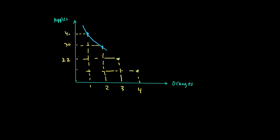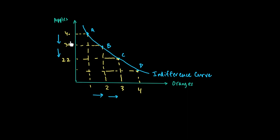As you get more and more oranges, you get less and less apples. As the consumer moves from A to B to C, he is choosing fewer apples, and in order to keep his satisfaction the same for combinations A and B, he needs to be compensated with more oranges. This shows a trade-off: more oranges means less apples and vice versa. The utility is assumed to be the same all along the indifference curve, so whenever he moves from A to B, he loses apples but gains oranges, keeping total utility constant.